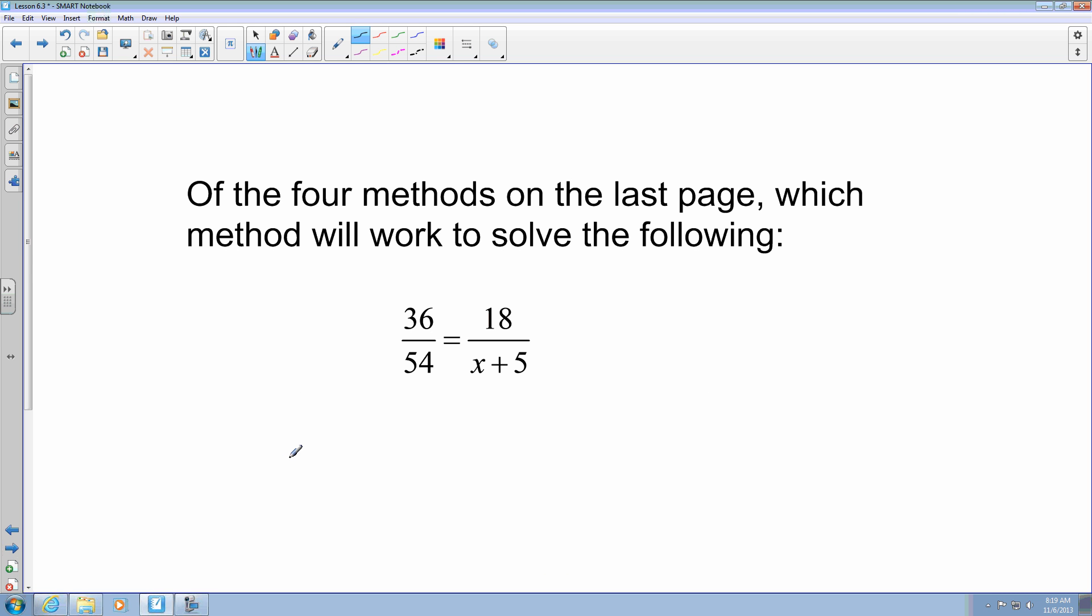But what we're talking about is we're going to use the cross products to help us solve this particular equation when it has more than one term in either the numerator and the denominator. The x plus 5 is what we're talking about. It has two terms in there. It's got x, and it's plus 5, so it has an operation involved. So when we're dealing with that, this portion right here, when we do the cross product, it stays the same.